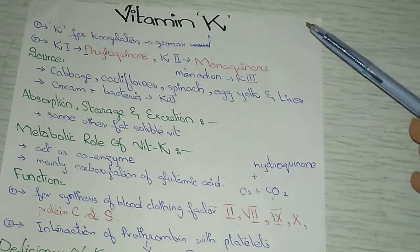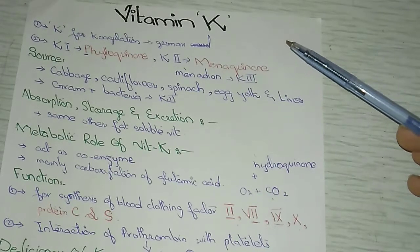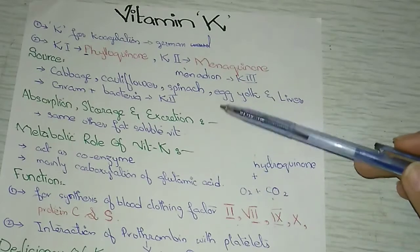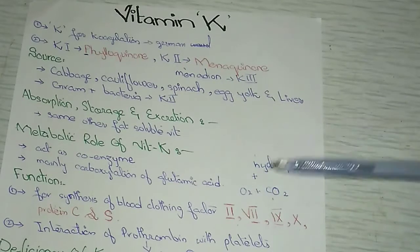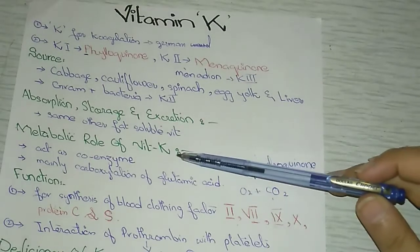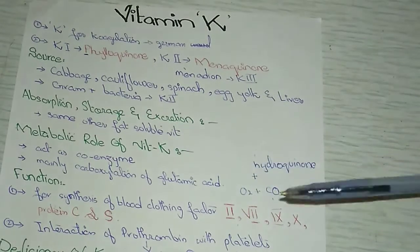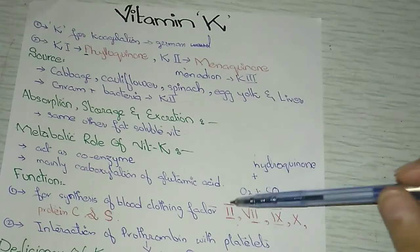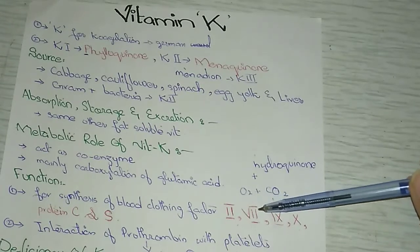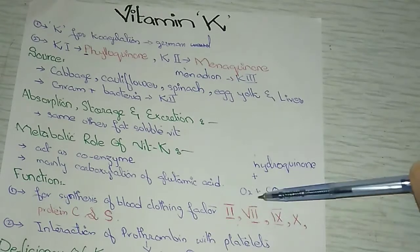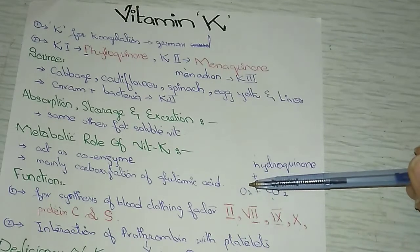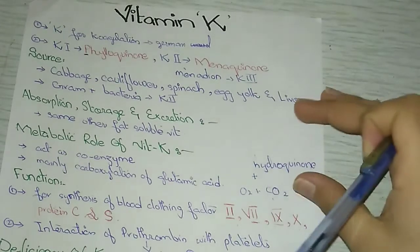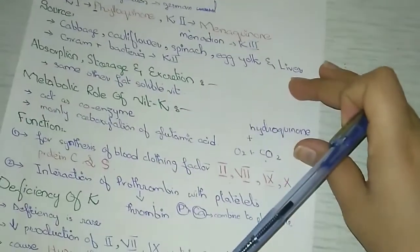Vitamin K acts as a coenzyme for clotting factors including protein S and protein C. The modification is mainly the carboxylation of certain glutamic acid residues present in these clotting factors. So vitamin K acts as a coenzyme for the carboxylation of glutamic acid present in these clotting factors. When these glutamic acid residues are carboxylated, the clotting factors become activated and perform their function. These are the important metabolic roles of vitamin K.